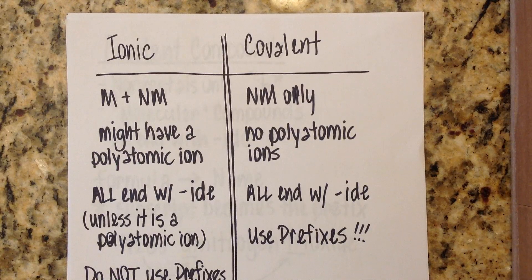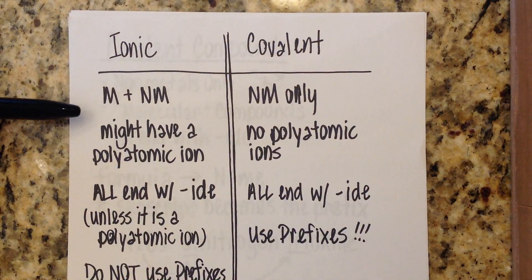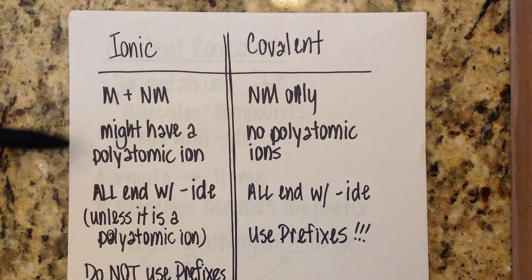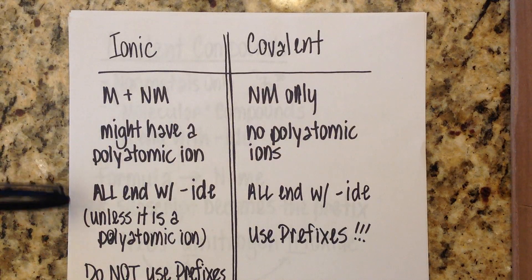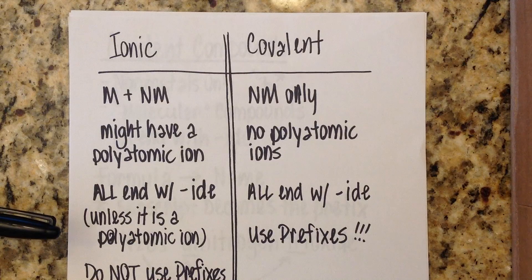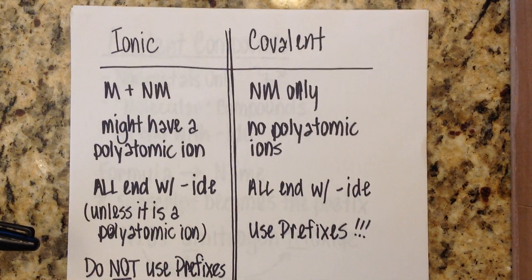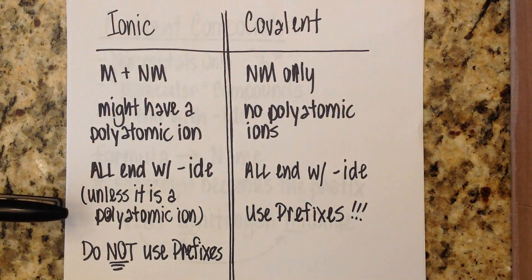A reminder before we start covalent: ionic compounds are metals and nonmetals. They might have a polyatomic ion in them — usually at the end, though it could be at the beginning, like ammonium. All ionic compound names end with IDE unless it has a polyatomic ion, in which case we don't change that ending. We will never use prefixes in ionics.